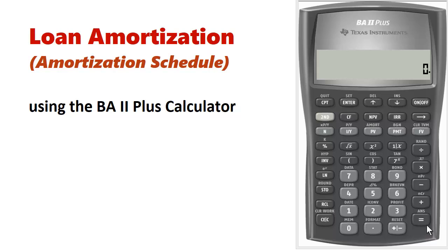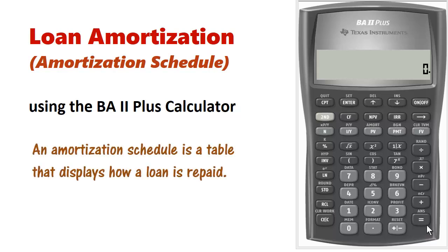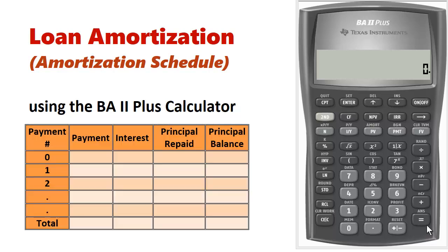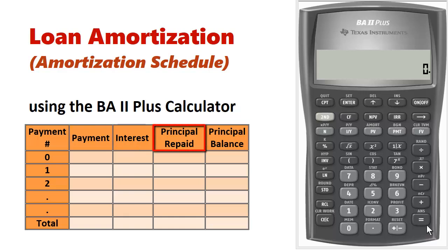An amortization schedule is a table that displays how a loan is repaid. It shows the payment number, the periodic payment amount, the interest included in each payment, the amount of principal repaid when a payment is made, and the outstanding principal balance.